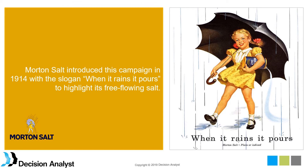The umbrella and the little girl really struck a chord with American consumers and added a great execution to what was otherwise a simple yet solid strategy. The picture tells the whole story — which was important because in 1914, radio and TV didn't yet exist, so newspapers and magazines were the primary advertising media. The little girl looks happy and self-confident, and somehow that really struck a chord with the American public. How you execute a strategy is often just as important as the underlying strategy itself.